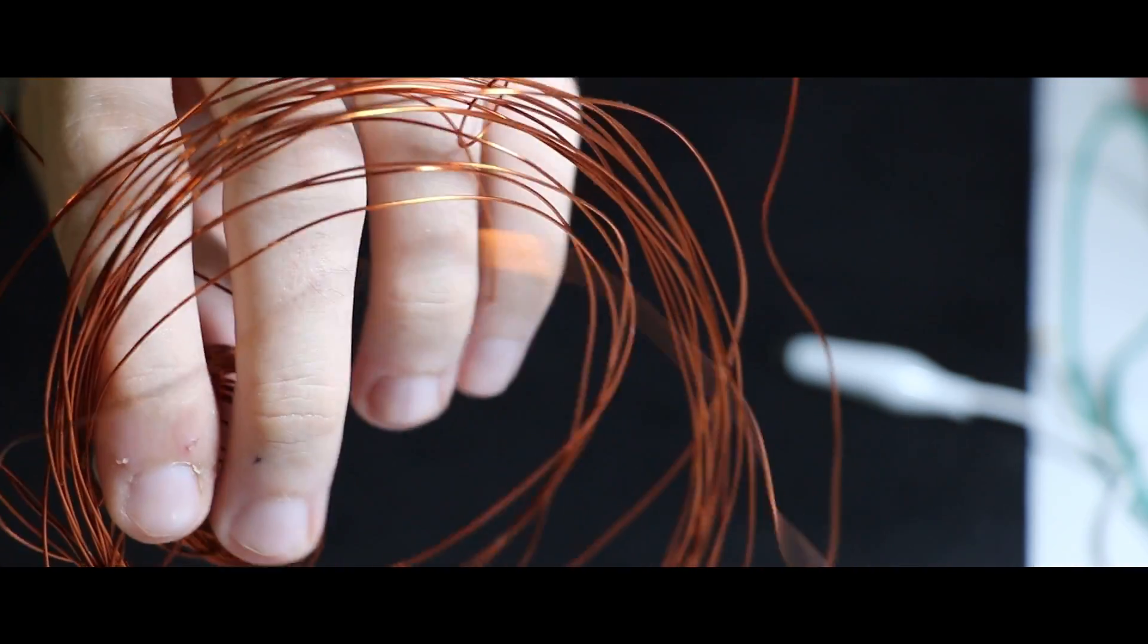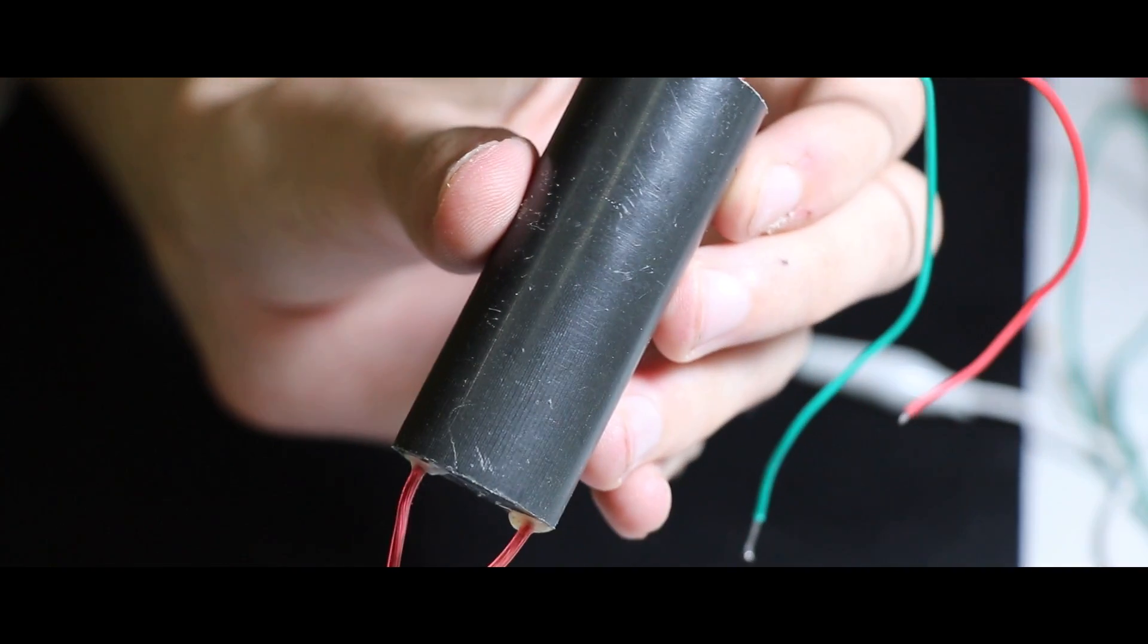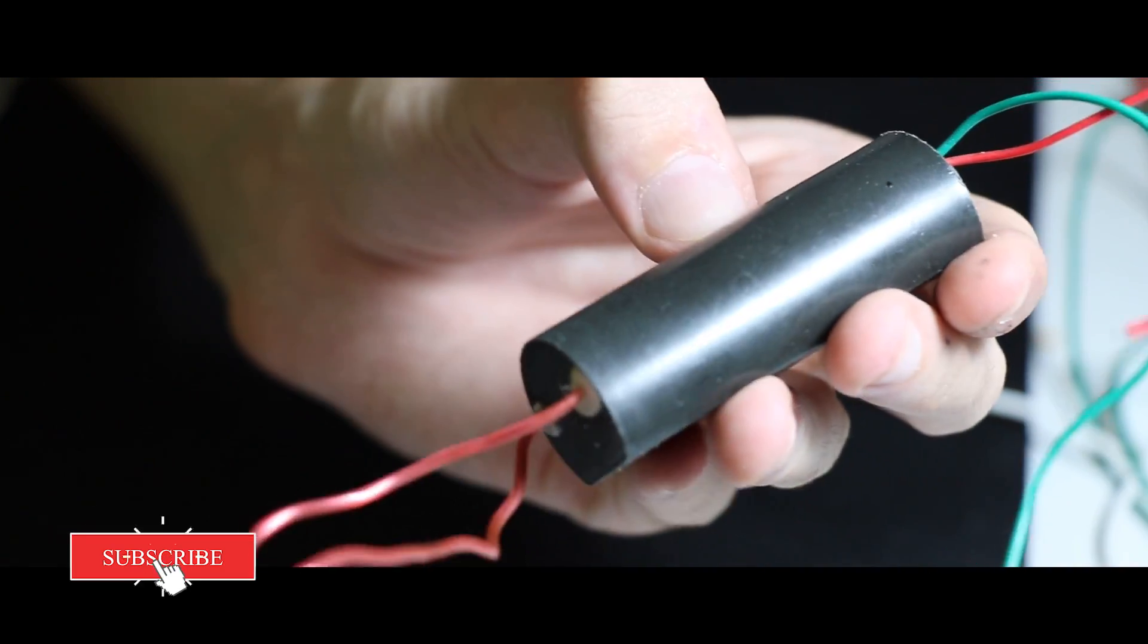We need wire to make a coil like this one I made before, and also a high voltage source. You can buy it from Amazon or any electronic shop.